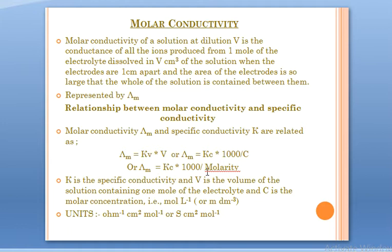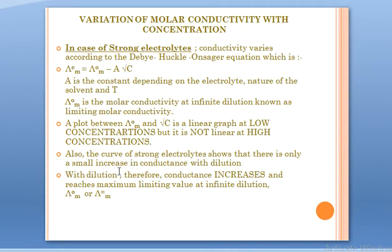Keeping all of these in mind, and knowing the units of all these individual parameters, we can derive the unit of λ_m. The units of molar conductivity are ohm⁻¹ cm² mol⁻¹. Since ohm⁻¹ equals siemens, you can also write the units as S cm² mol⁻¹. These are the units of molar conductivity.